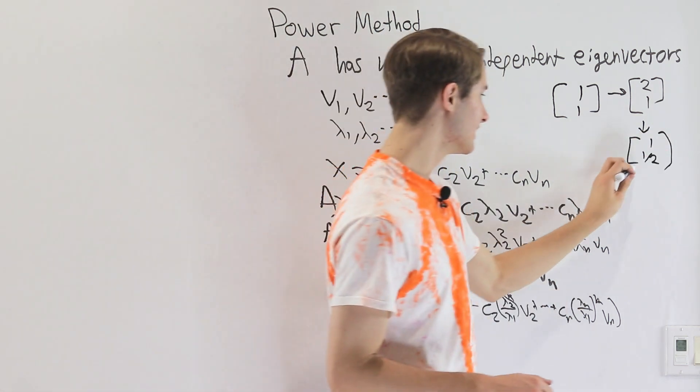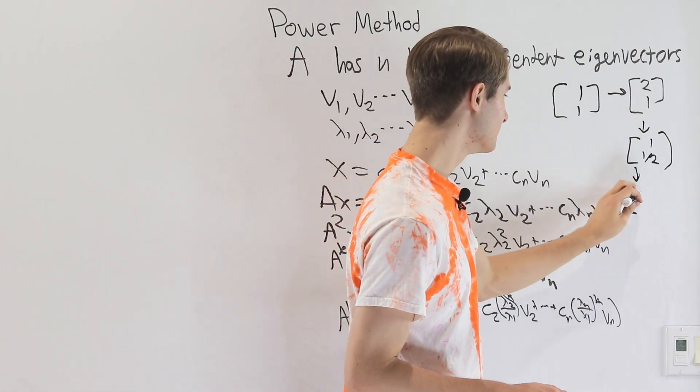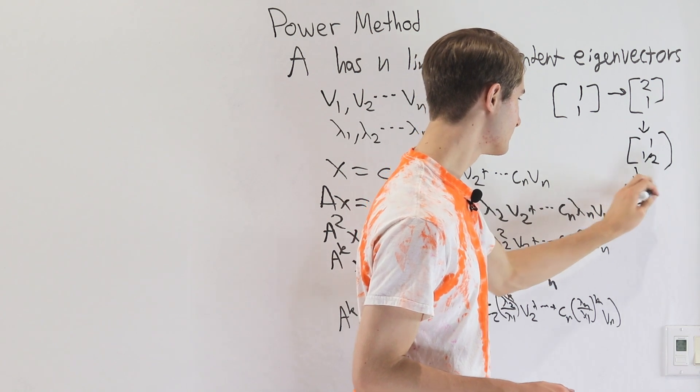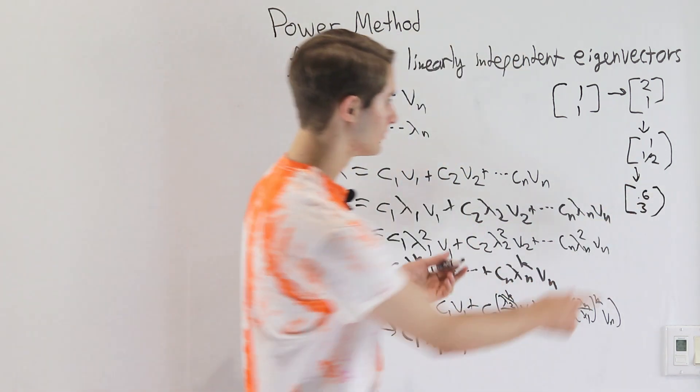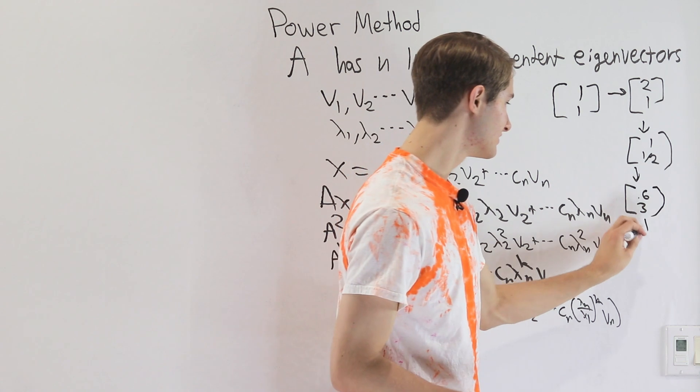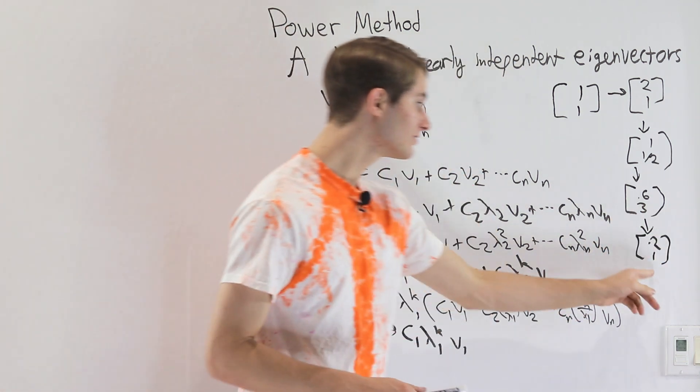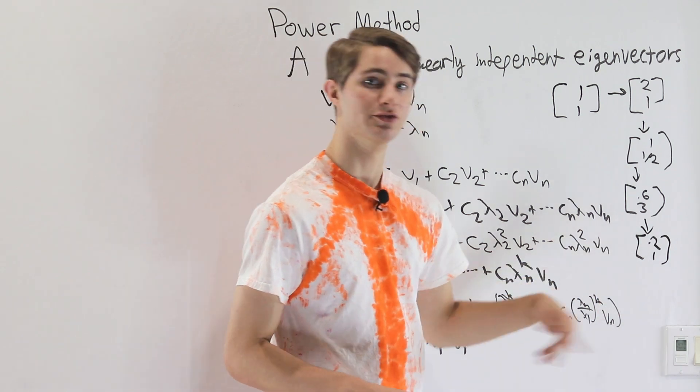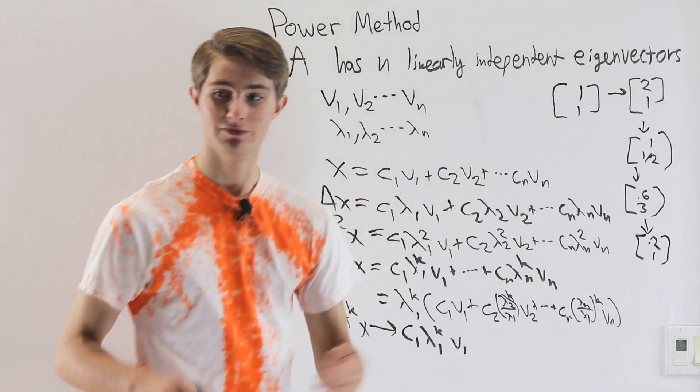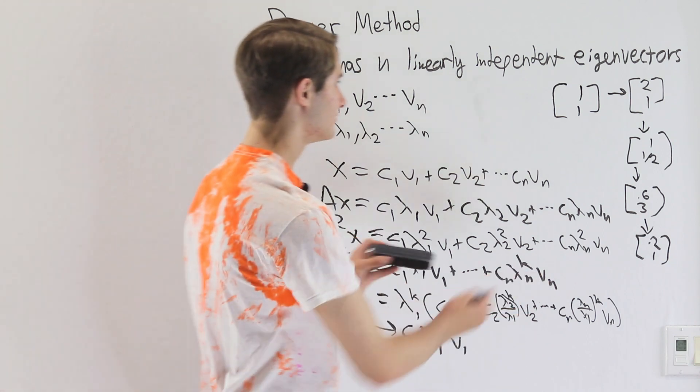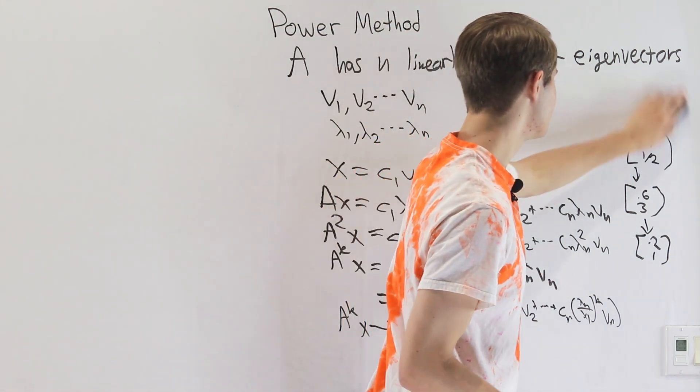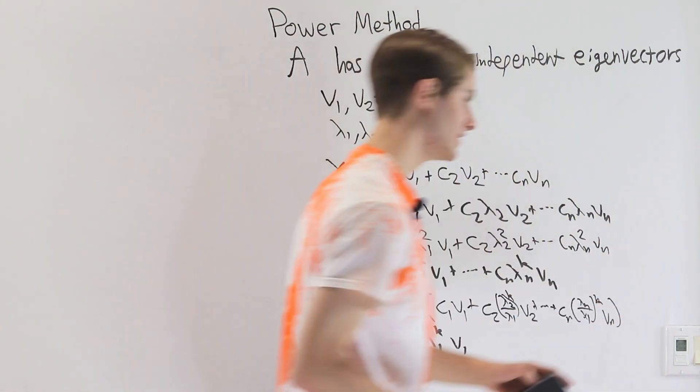And then if we applied the matrix again and say this time we get 0.6, 3, in this case 3 is the biggest number. So we would scale it down by 3. So we're always just making sure that the biggest component of our vector is 1. And that way our vector doesn't have the problem of blowing up too big. And that's a relatively easy computation to perform in between the matrix vector multiplications.